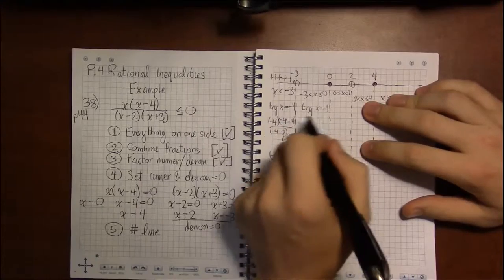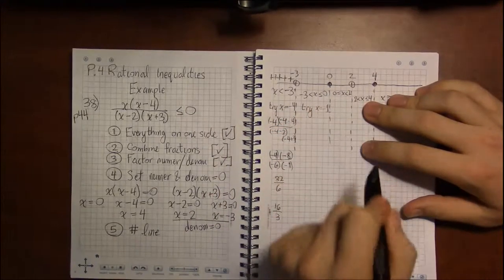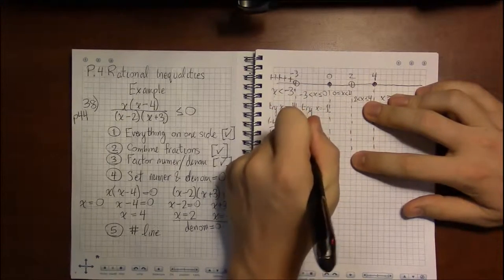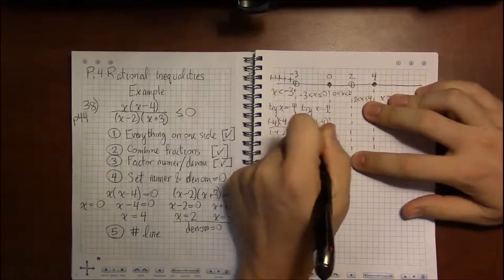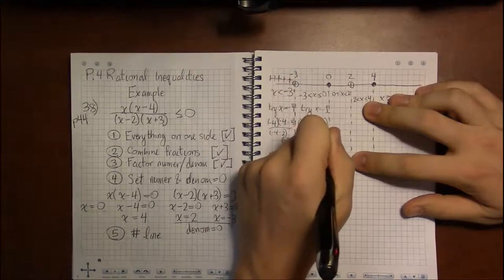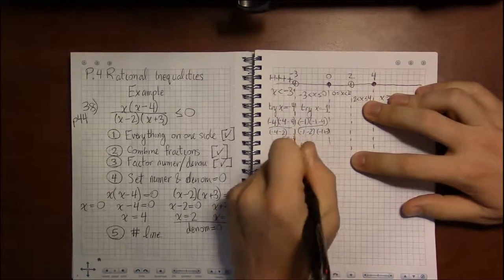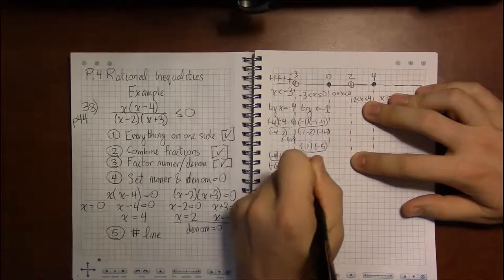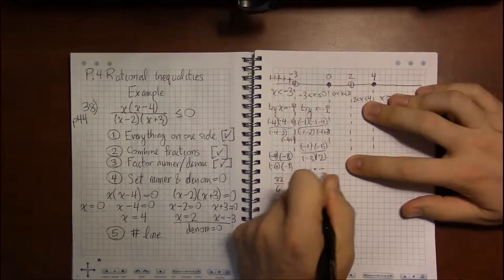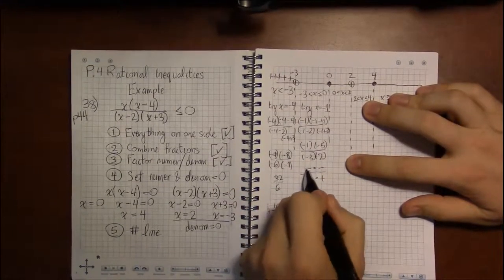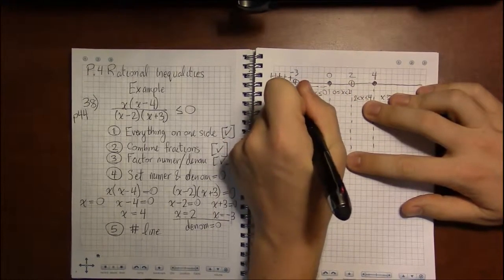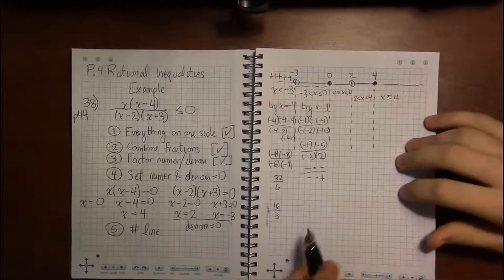x equals minus 1. Because we couldn't pick an end point. We have to pick, for our test point, something between minus 1, minus 4, minus 1, minus 2, minus 1, plus 3. So, this is minus 1 times minus 5 over minus 3 times 2. So, that's negative times negative over negative times positive. 1, 2, 3 negatives ends up giving me a negative. That's what I mean by doing the signs.